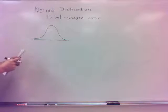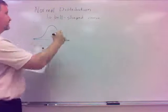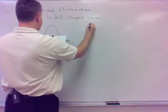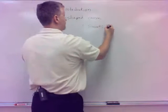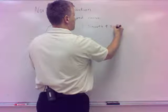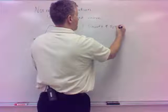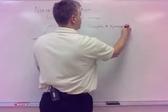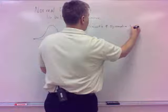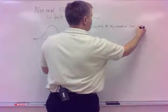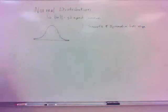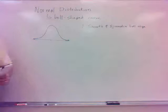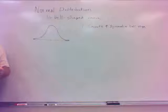Alright, but, yeah, a couple of things about the normal distribution. Like I said, number one, it is smooth, and the other point is that it's symmetric. It's a smooth and symmetric bell-shaped curve.